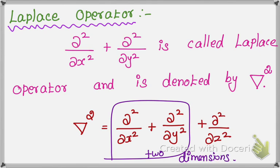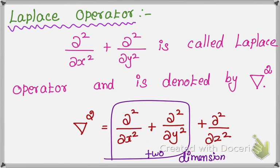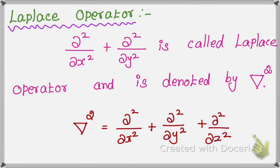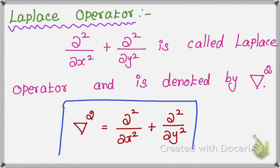Suppose the equation is in three dimensions — then you can additionally write the ∂²/∂z² term as well, giving x, y, and z. You can memorize the formula. This is called the operator: ∇² = ∂²/∂x² + ∂²/∂y² + ∂²/∂z². Thank you.